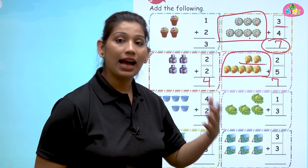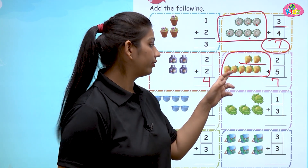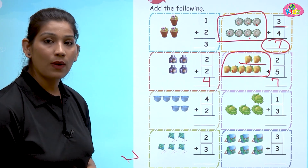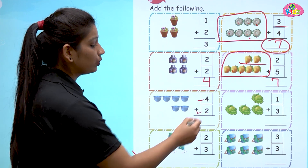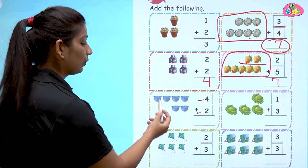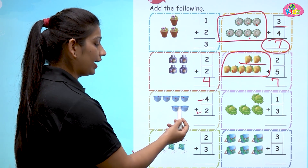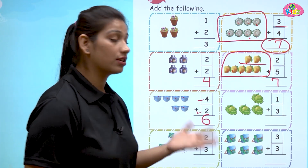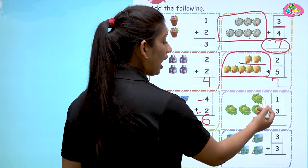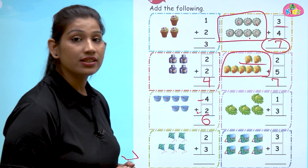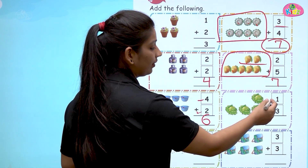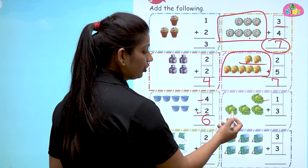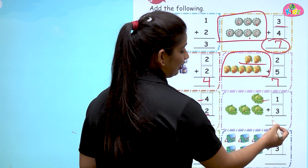You just have to count after the first number. Ab two ke aage se phir se count nahi karenge — you will count after two: three, four, five, six, seven. Four plus two — one, two, three, four, five, six — four plus two is six. You can also count after this number.